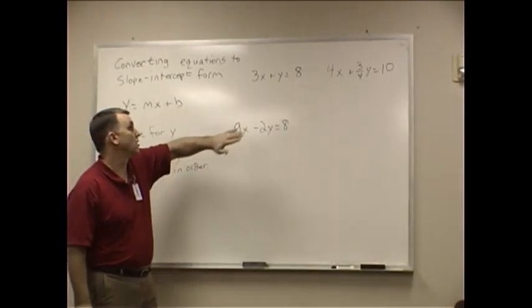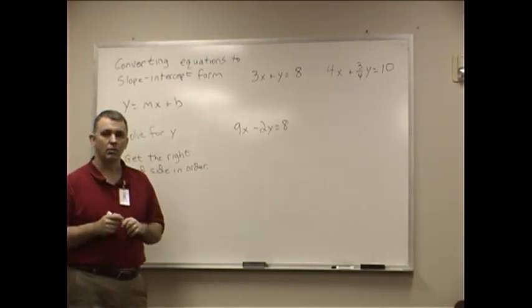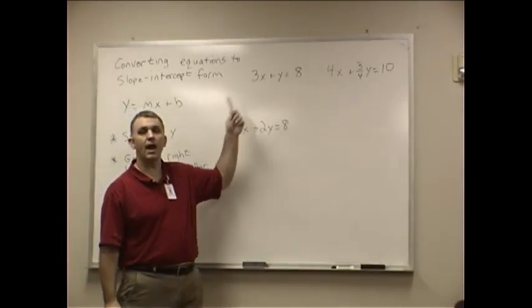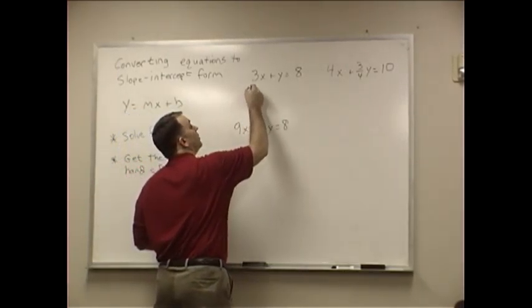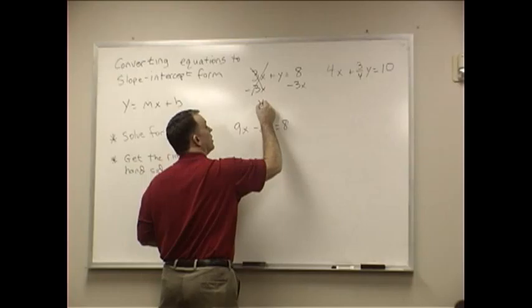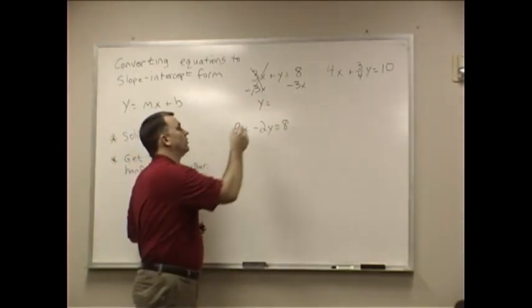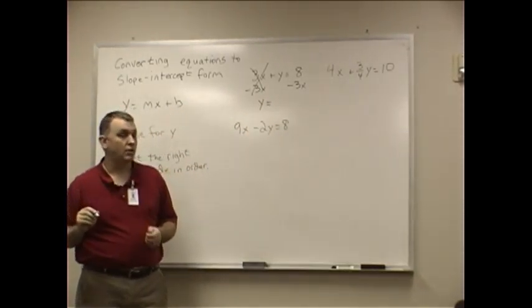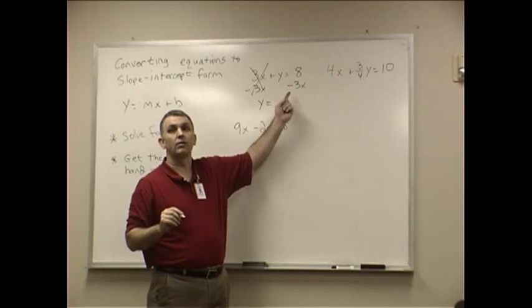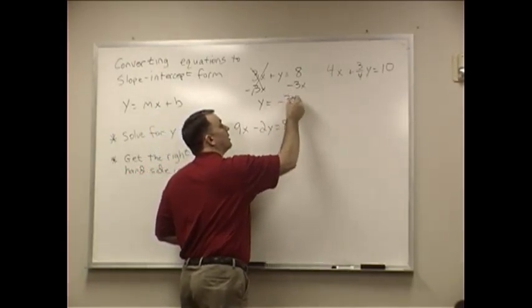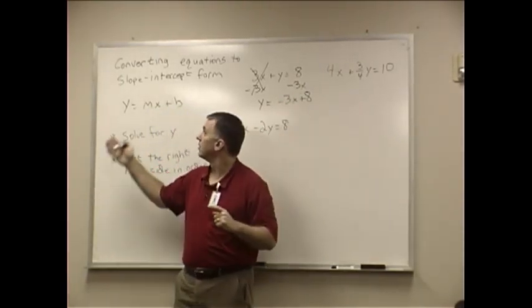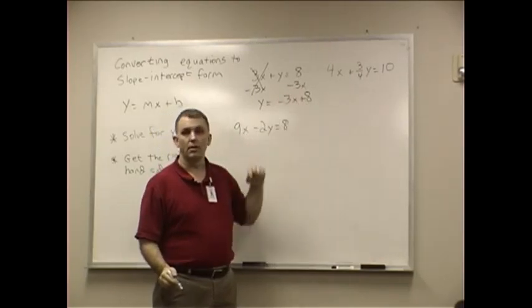I wrote three examples on the board. The first example, 3X plus Y equals 8. The Y is on the left-hand side, which is good, but the 3X is not where it should be. So what we're going to do is subtract 3X from both sides. That will cancel it out over here, giving me Y equals. Should I write 8 minus 3X or should I write negative 3X plus 8? I want to write negative 3X plus 8. I need the X part to come second for this form, and I need the 8 to come last.